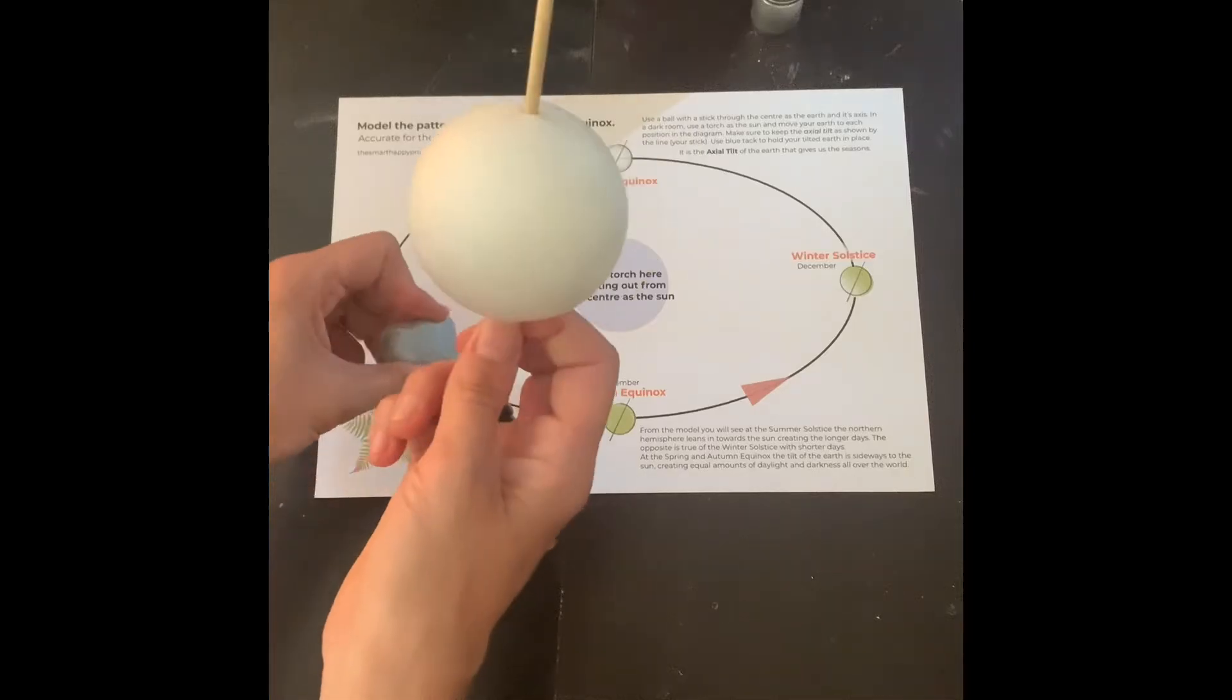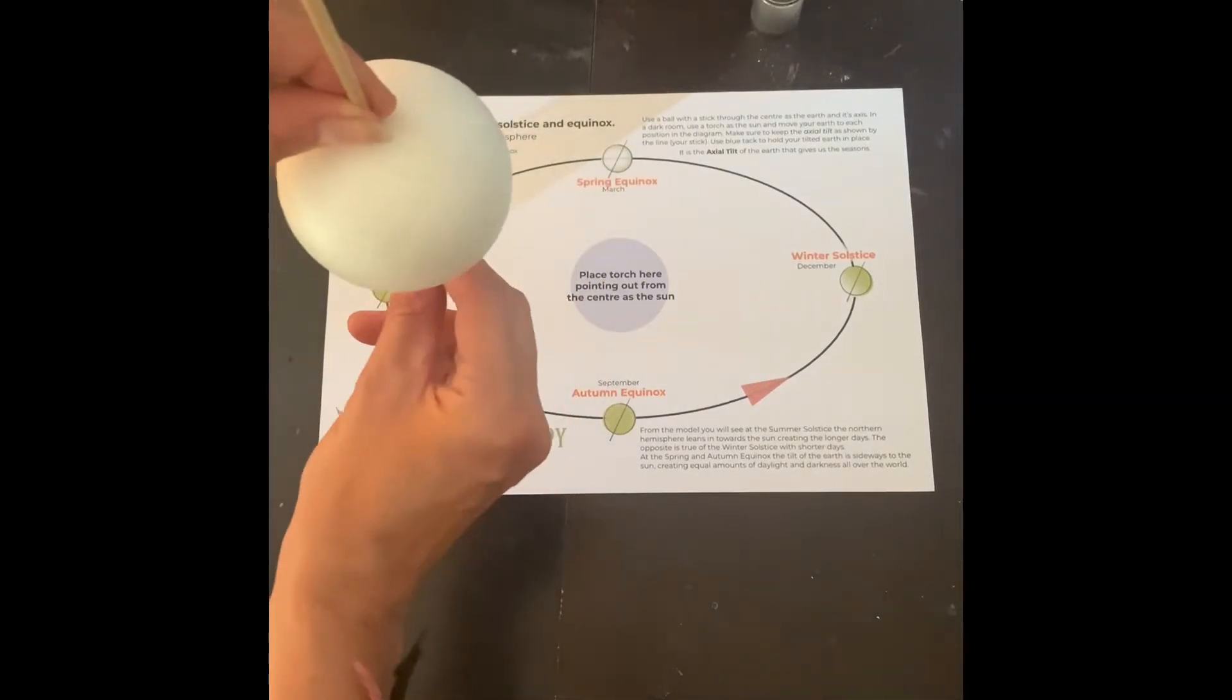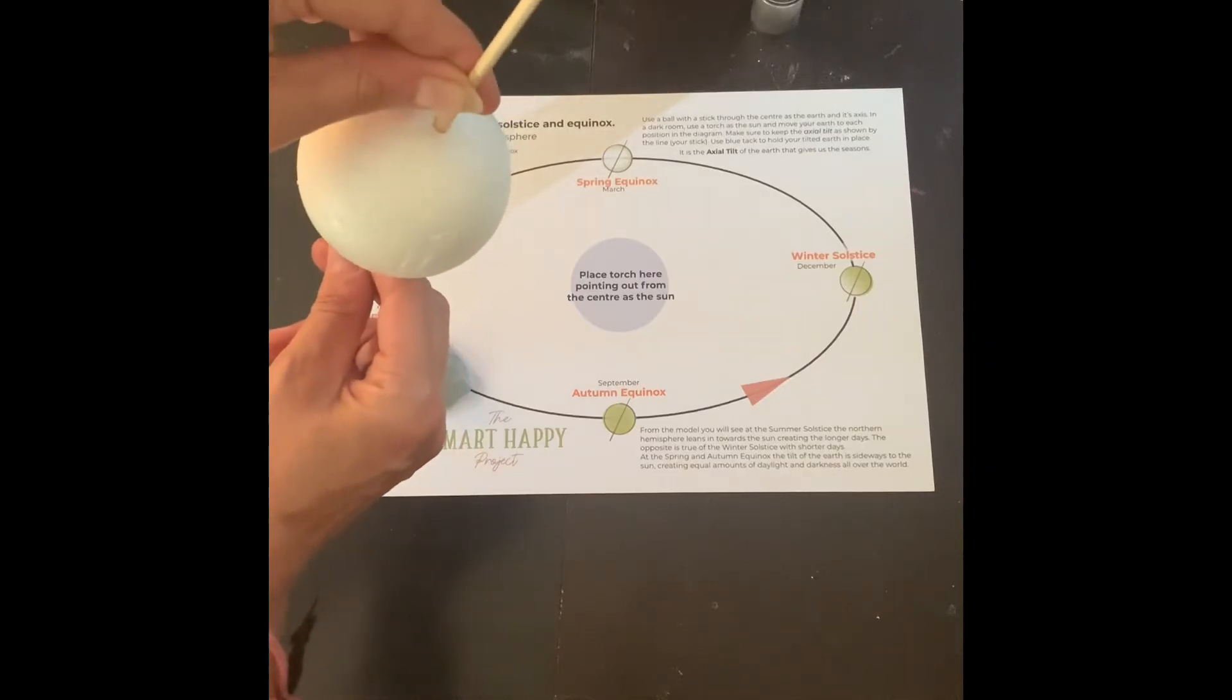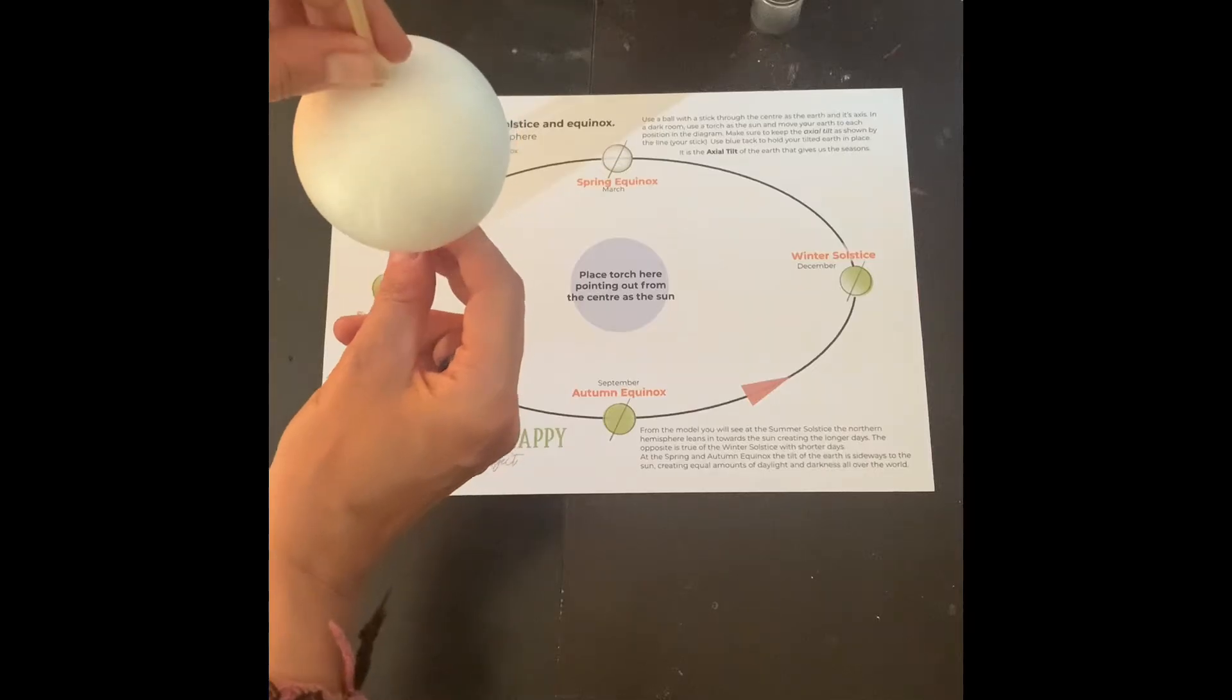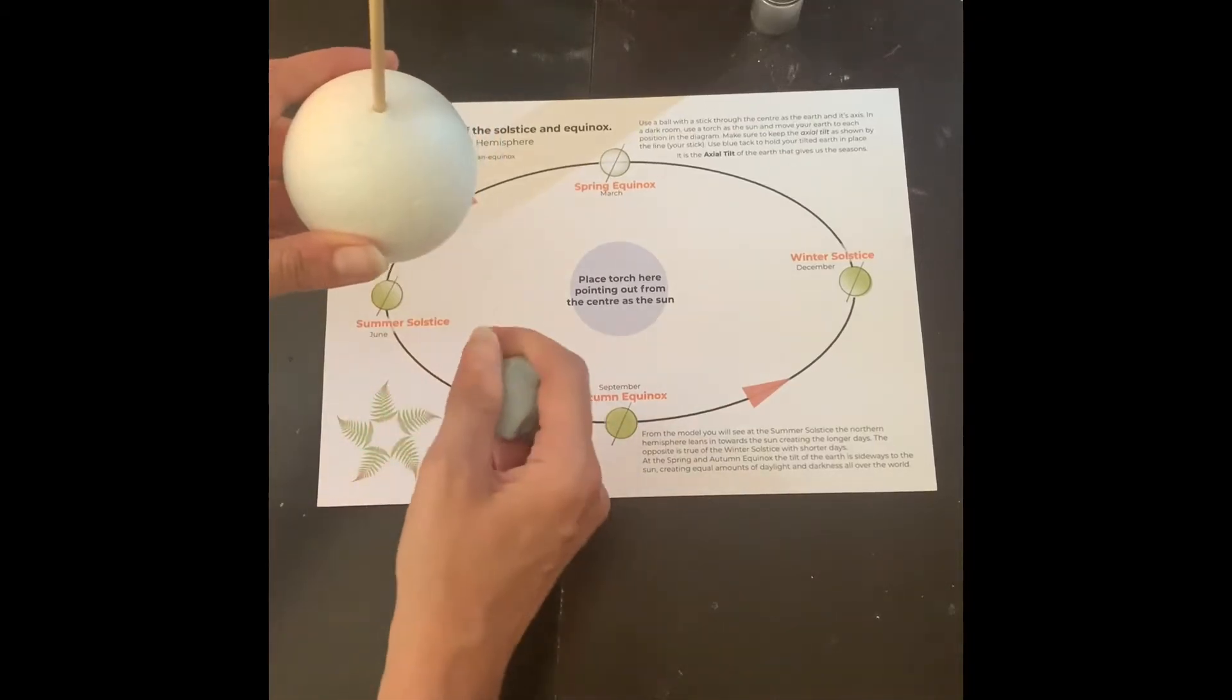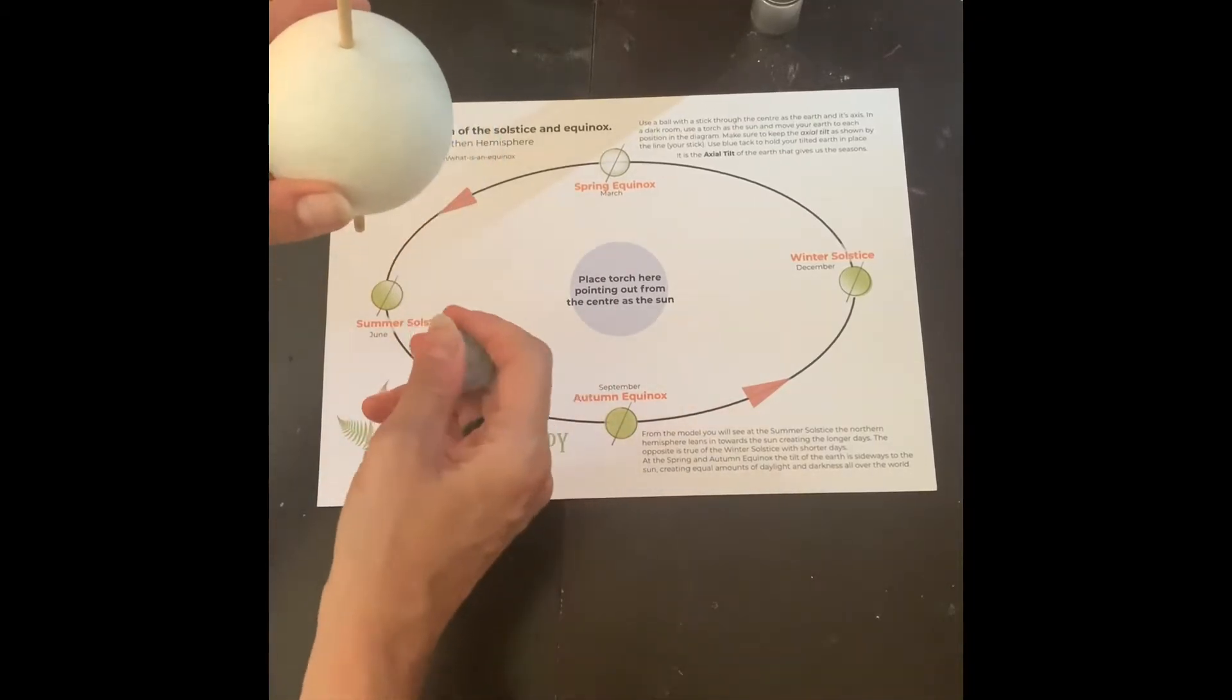What we have to remember is that the Earth doesn't sit upright as it travels around the sun - it actually leans. It's called the axial tilt. The actual tilt is I think it's something like 23.4 degrees if I remember right.